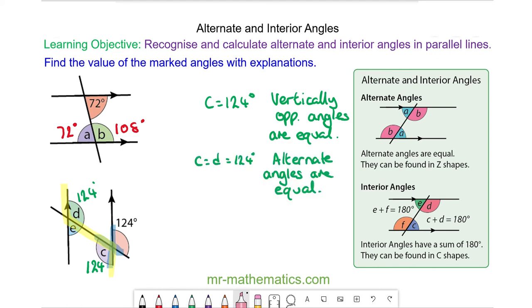And finally we can see angle E and angle C are interior. So E will be 180 degrees minus 124. E will be 56 degrees.